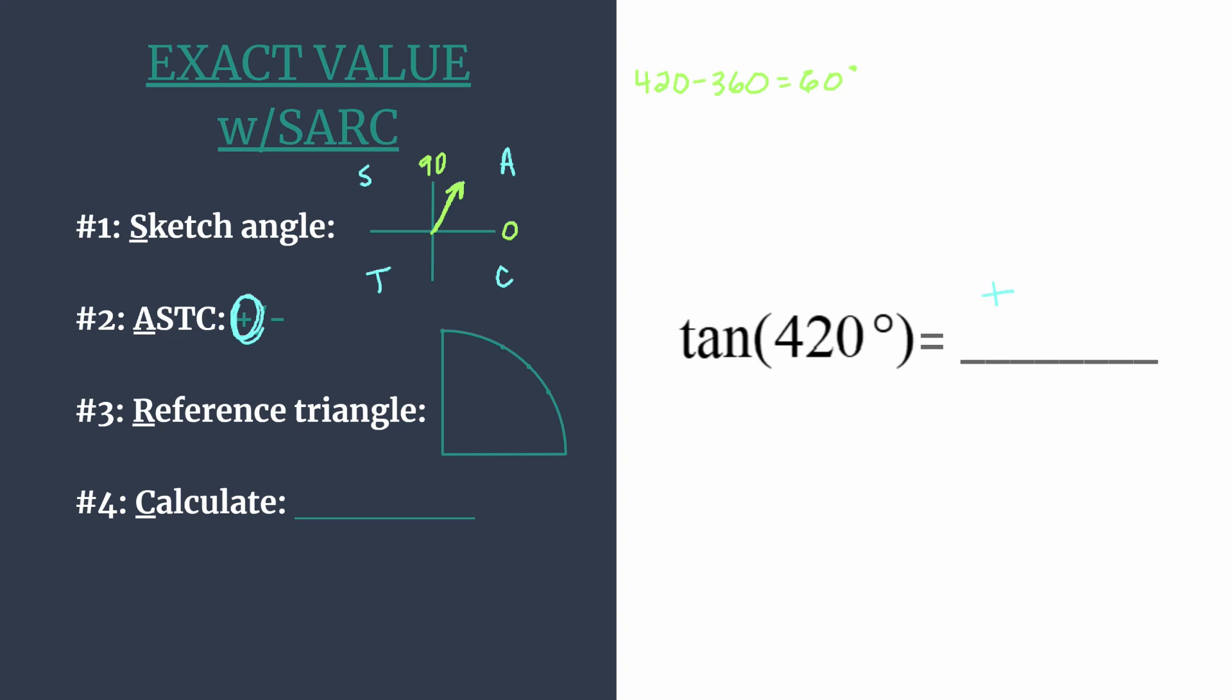Alright so now we can move on to step 3 and work with our reference angle and our special right triangle and coordinates. So our reference angle is pretty easy to find here, it's just going to be the amount of rotation from the terminal side to the x-axis, and since we found that coterminal angle of 60 degrees, we can pretty easily see that's also going to be the value for our reference angle.